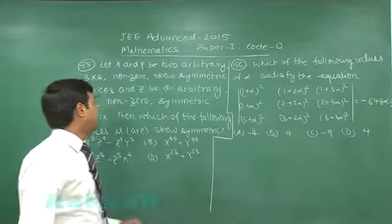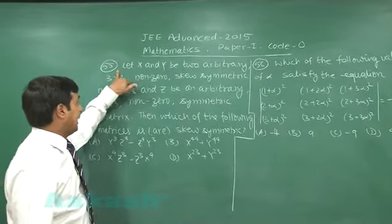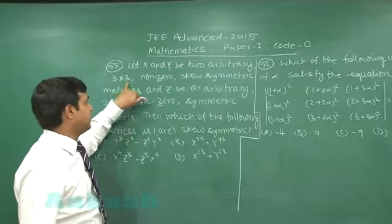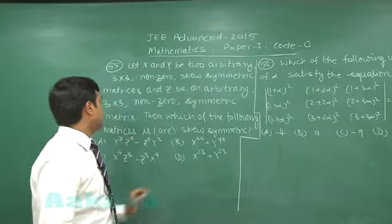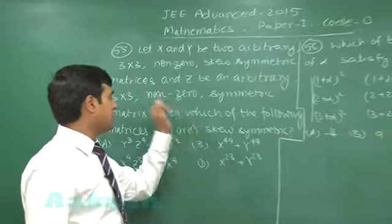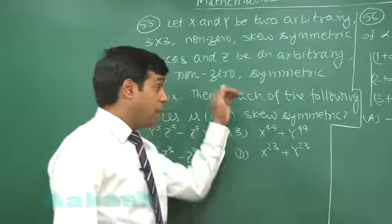Okay, let's go for the next one, that is question number 55. Let X and Y be two arbitrary 3 by 3 non-zero skew symmetric matrices and Z be an arbitrary 3 by 3 non-zero symmetric matrix. Which of the following matrices is skew symmetric?